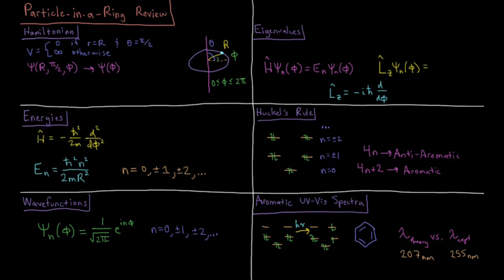This video is a review of the particle in a ring chapter in the quantum chemistry playlist. We start by defining our coordinates and our Hamiltonian for our model system.